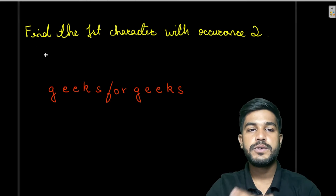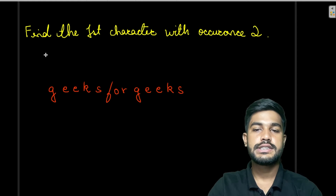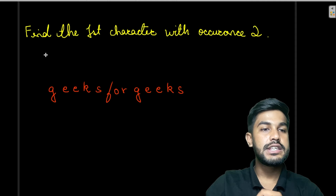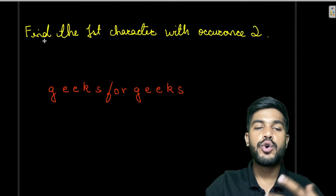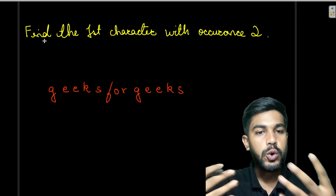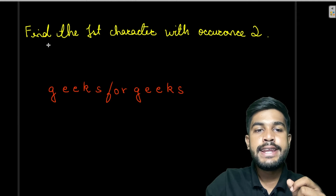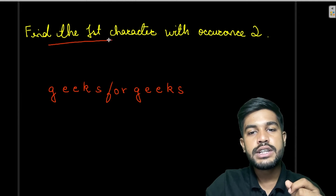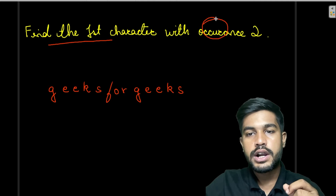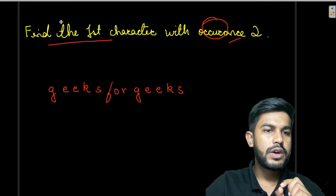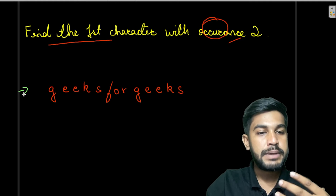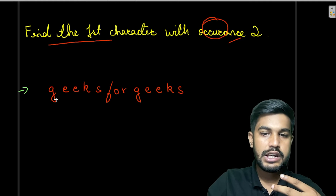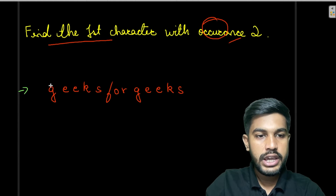Hi and welcome to GeeksForGeeks. Today we would be discussing this problem. We are given a string which would only contain lowercase characters and we need to find the first character with the occurrence of two. So let's do the dry run on the sample test case.